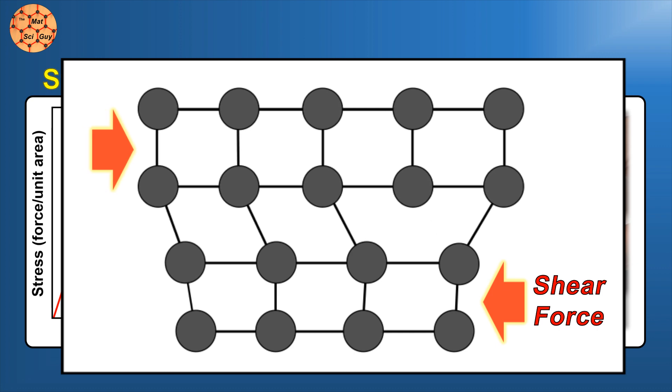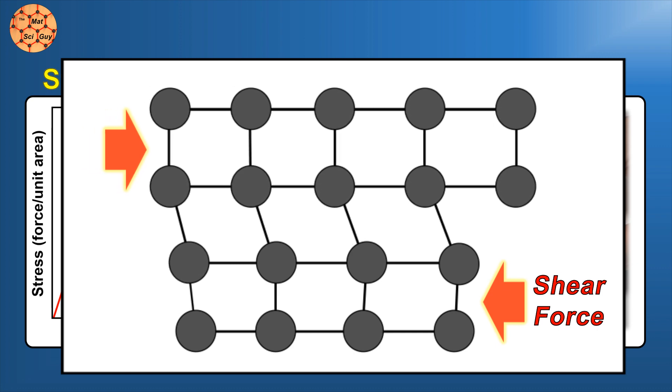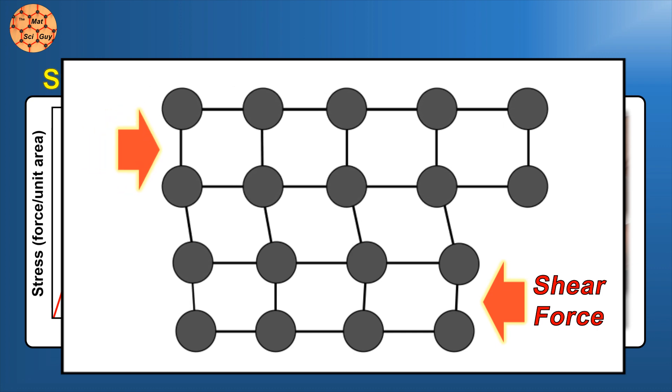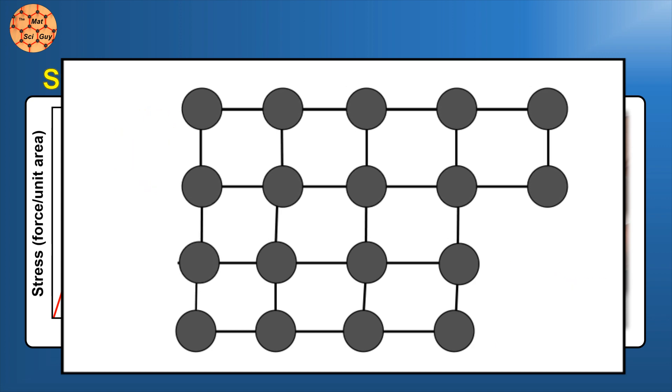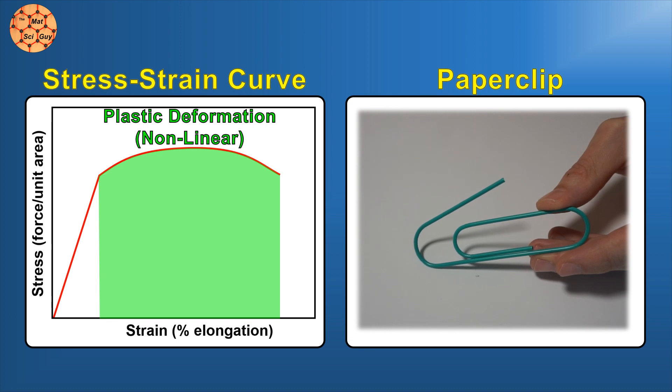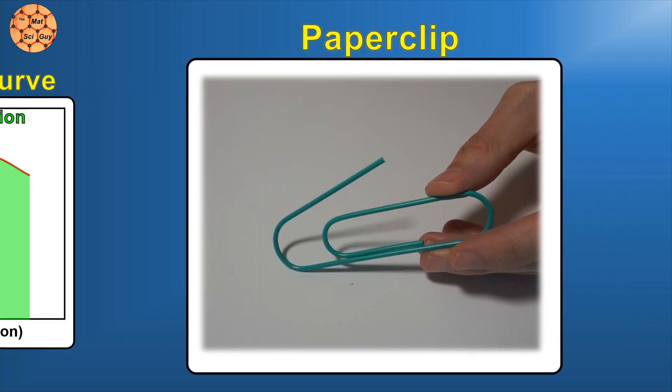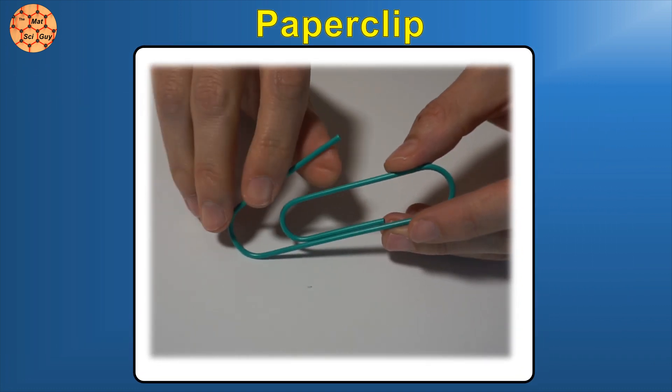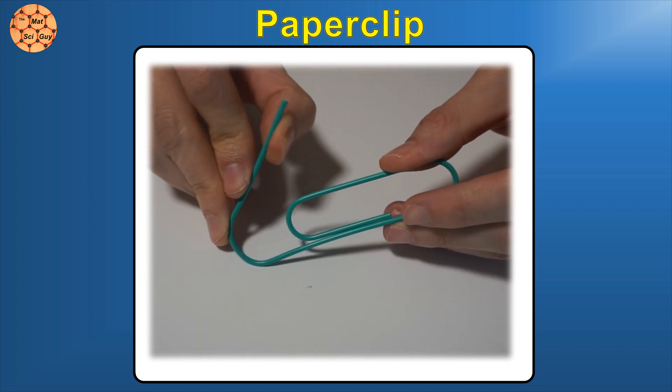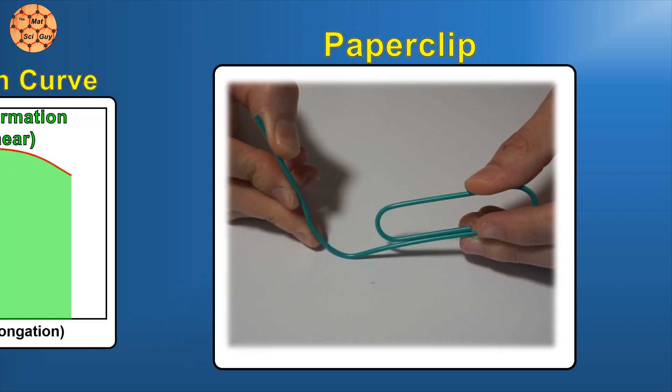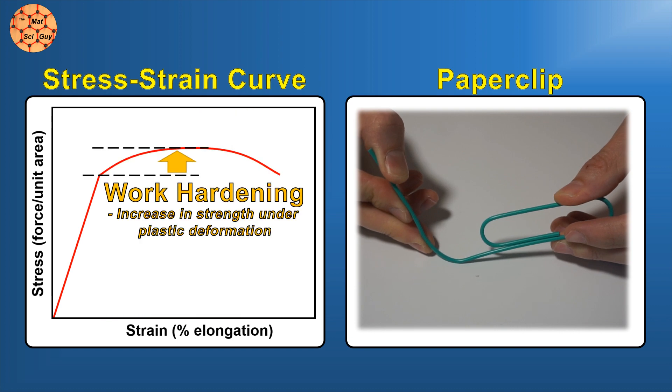Unlike the previous region of elastic deformation, atoms are actually changing location relative to each other. Even once the force is removed, our paperclip shape remains altered. The force to induce dislocation movement is also fairly constant in a material like this, so once we start to bend the paperclip, we don't need to apply more and more force to bend it further. There is often a slight increase in metals due to work hardening, but it's probably too small to feel in this case.